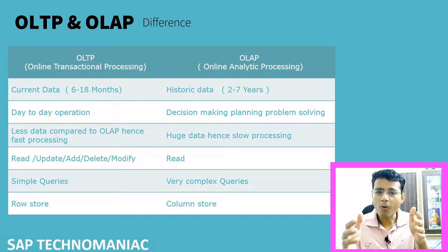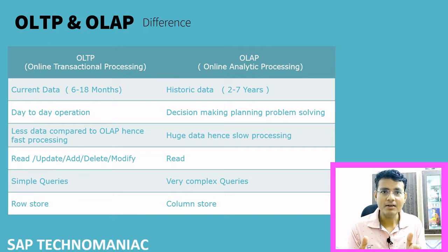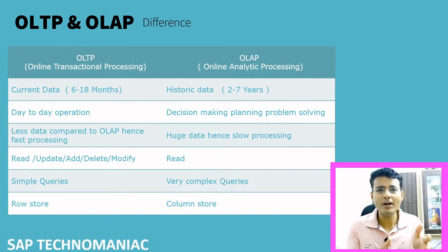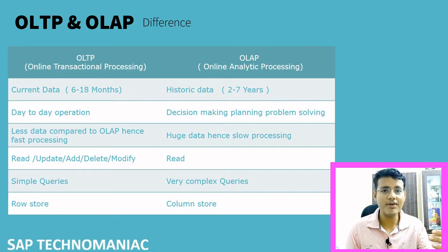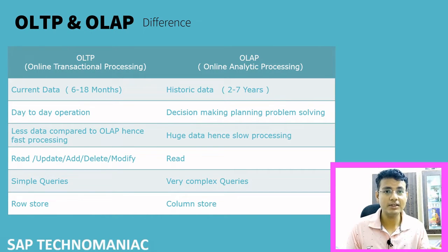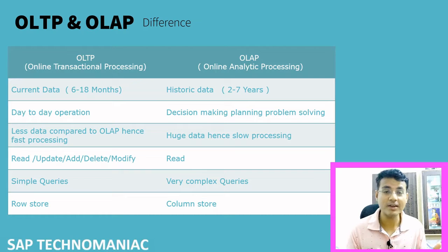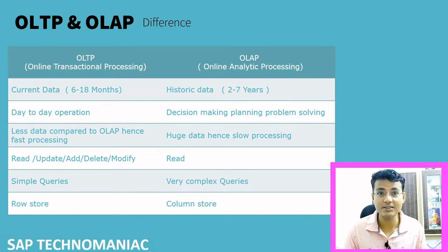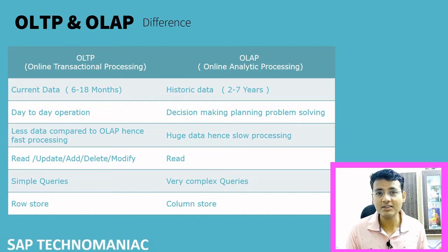In OLTP, for example, our ECC system is where we are having a lot of transactions happening day by day — we are creating sales orders, purchase orders, deliveries, accounting documents. A lot of things we are doing day by day and transactions are happening.